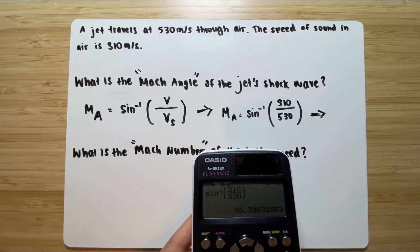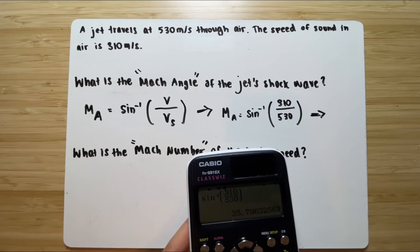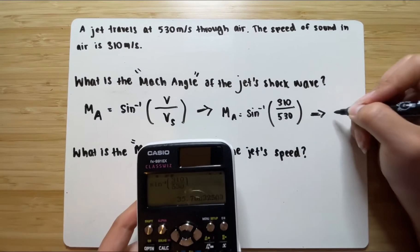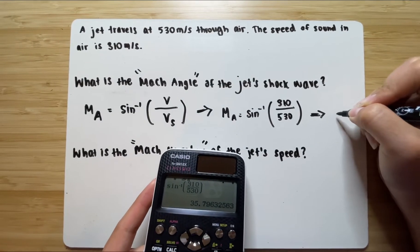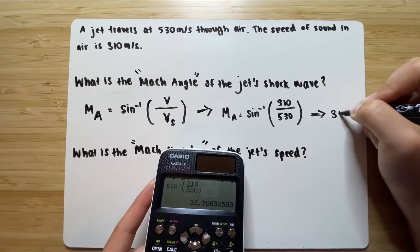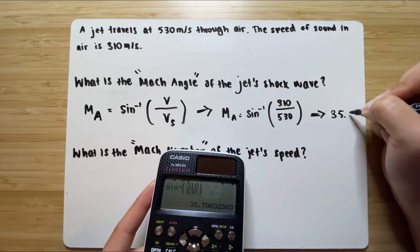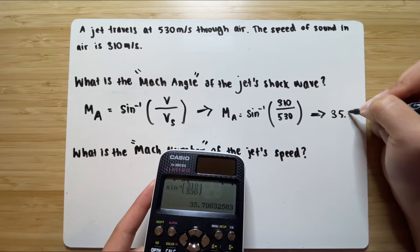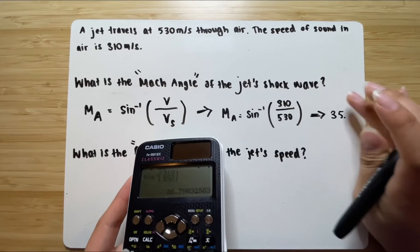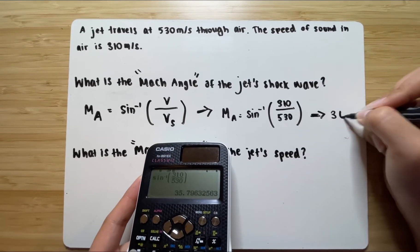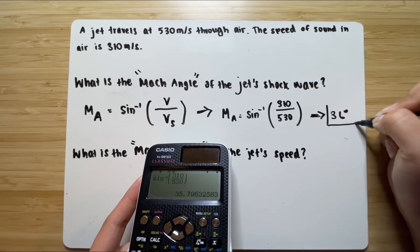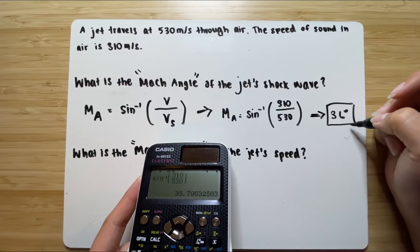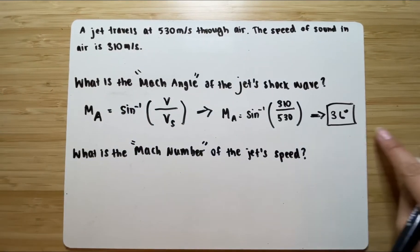You get 35.79 and then the number trails off. So 35.79. We could round it to be 36. So the degrees would be 36. So this would be the Mach angle of the shockwave in degrees.